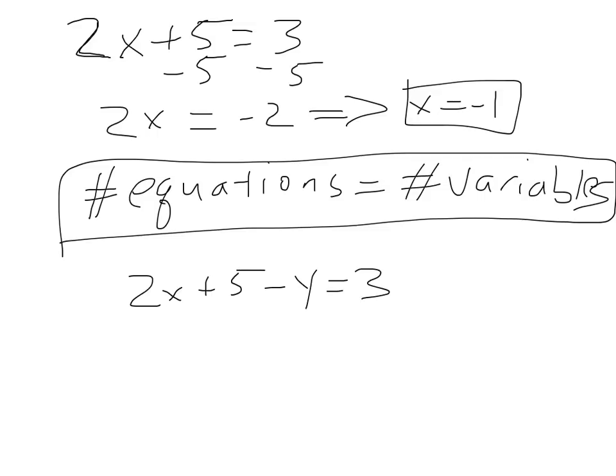In this equation I have two variables, x and y, and I can go ahead and stare at this problem, try all my different mathematical tricks — bring things to one side, divide, whatever — and I will never be able to solve it. It's just physically, mathematically impossible because I have two variables and only one equation.